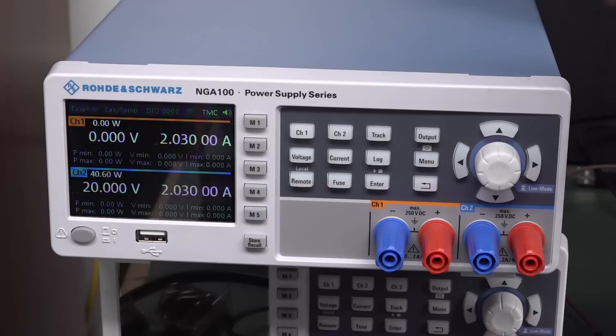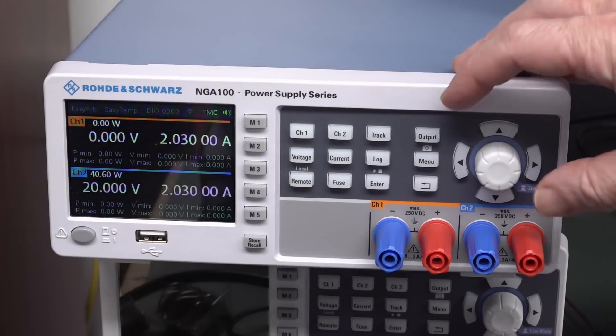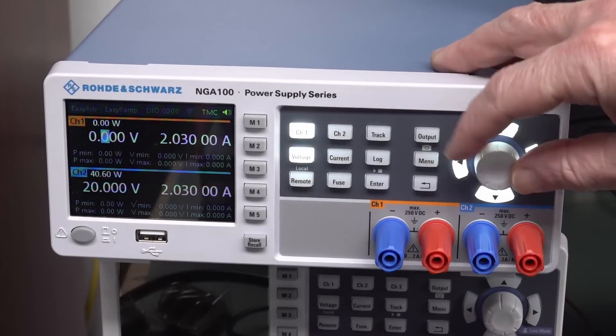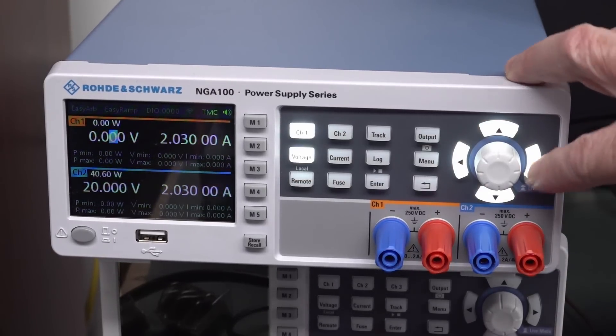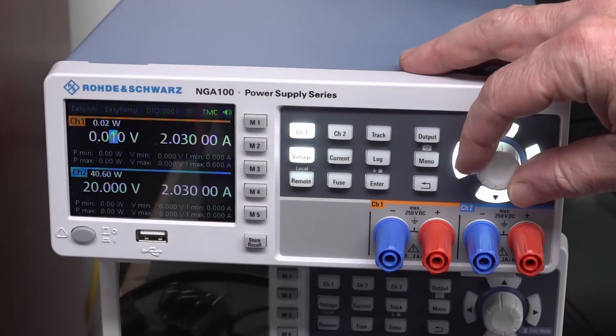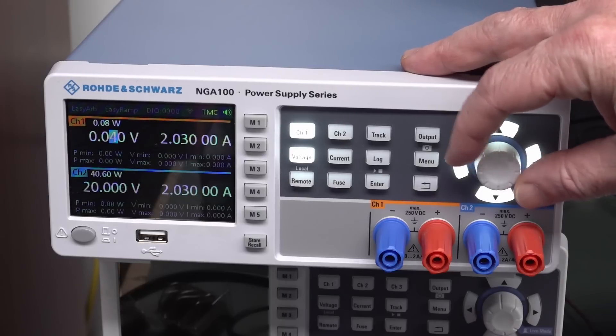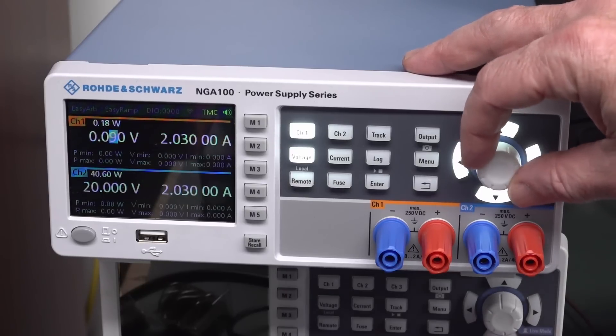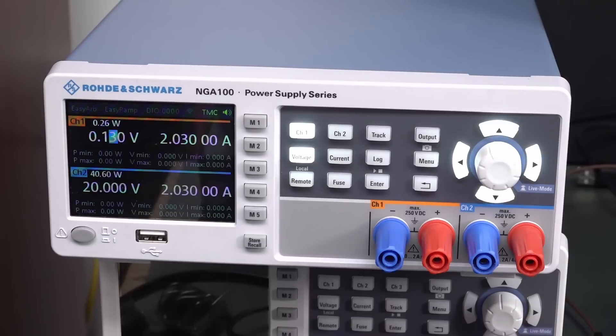Have you ever needed to generate a precisely changing voltage in small increment steps? Like ordinarily you might use your fancy modern digital power supply like this, but typically even on a top unit like this Rohde & Schwarz, you can only do 10 millivolt increments. Have you ever had a need for generating much smaller voltage increments?